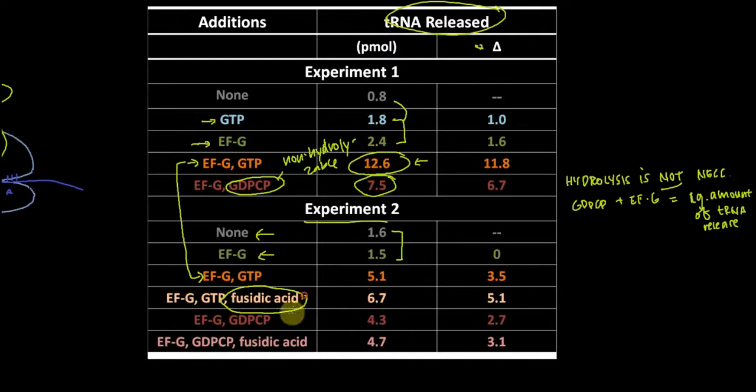They add this thing called fusidic acid. What is fusidic acid? It's actually an antibiotic that prevents the dissociation of EFG from the ribosome. What do we see in the presence of fusidic acid? We see an increase in tRNA release, but not a huge amount. I wouldn't say fusidic acid makes tRNA release better, but in the presence of fusidic acid, you still see translocation. EFG doesn't have to dissociate from the ribosome for translocation to happen, because if fusidic acid is preventing dissociation, the translocation can still occur.